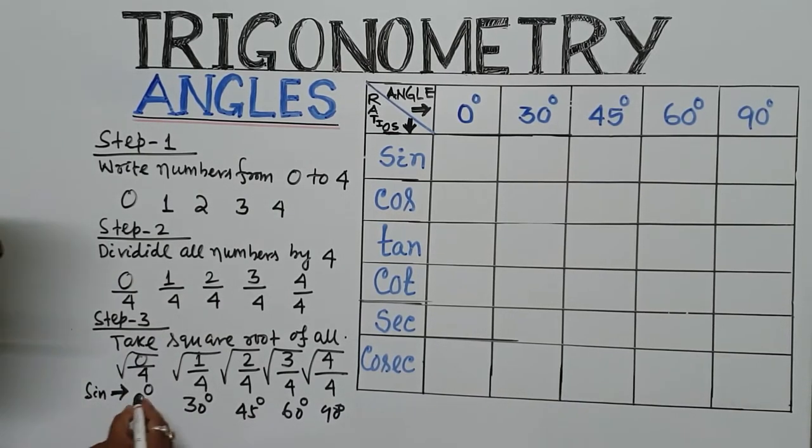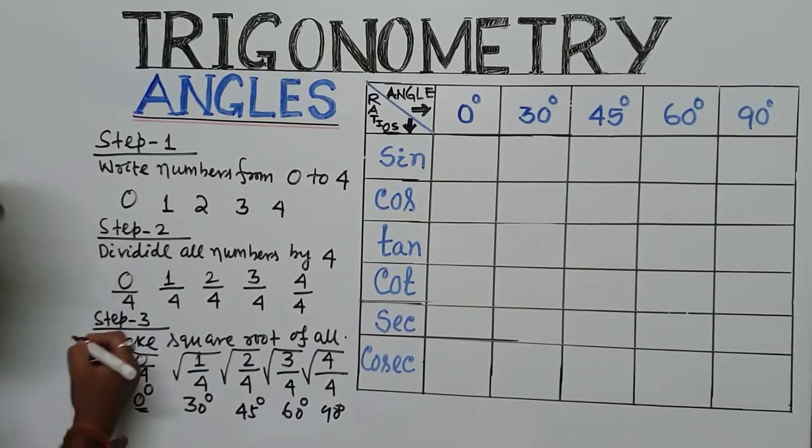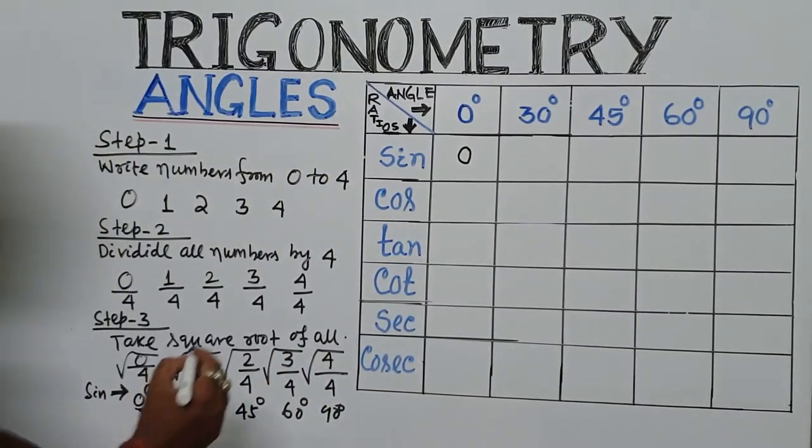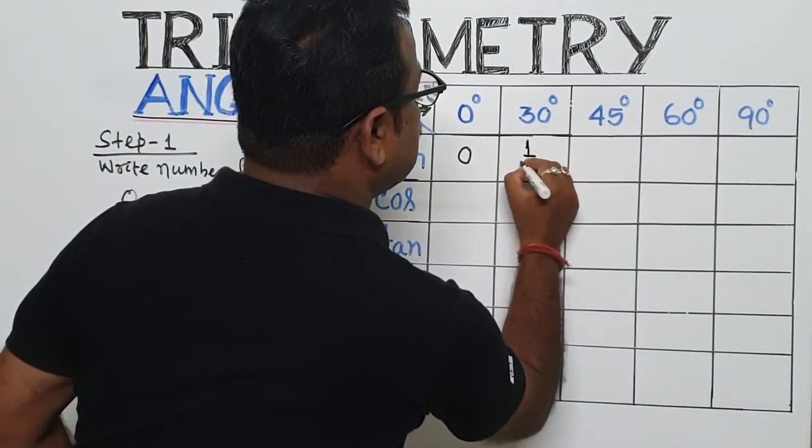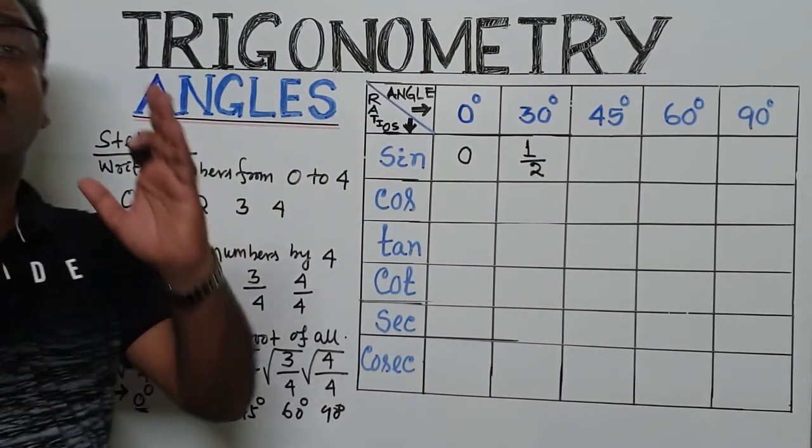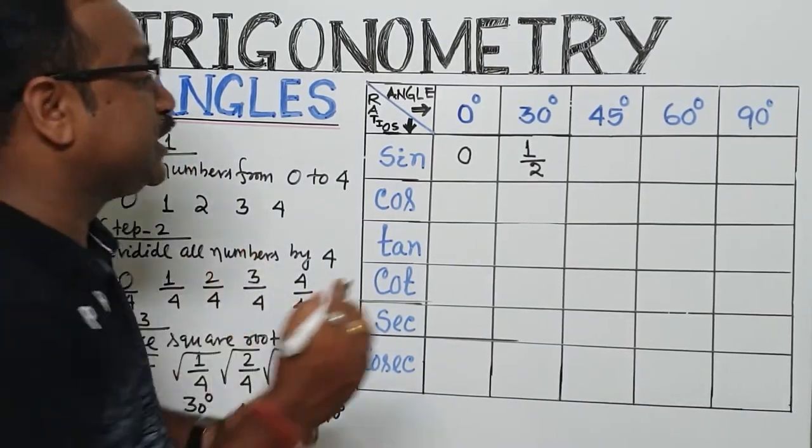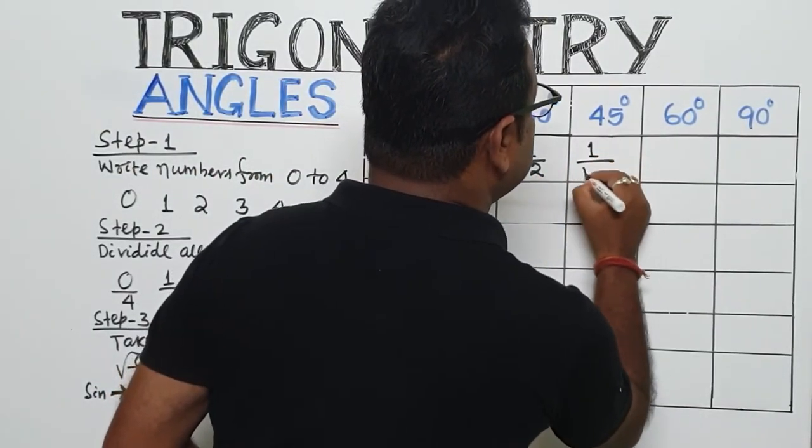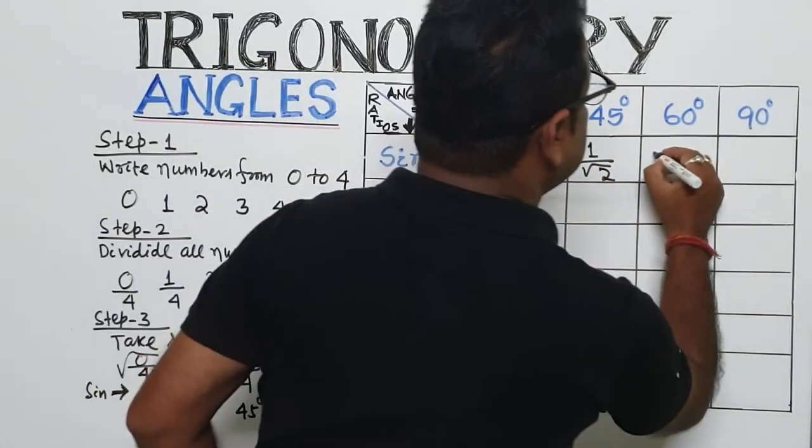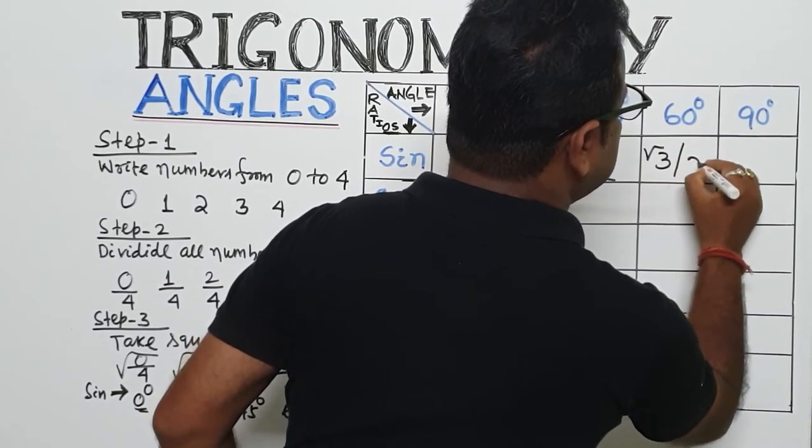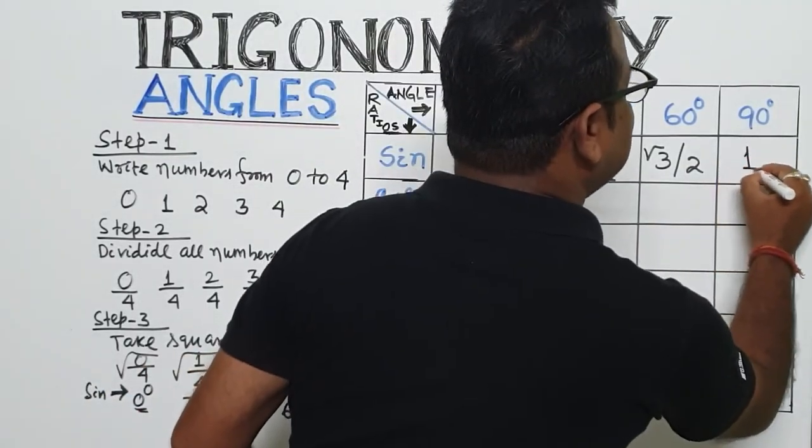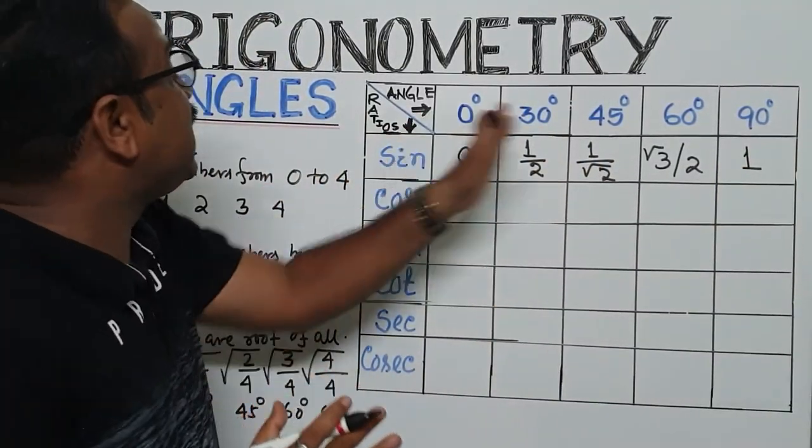Here, sin 0 degree: 0 by 4, 0 by something is 0, root over. Now, 1 by 4, that will be root over 1 by 4, will be 1 by 2. Now, 2 by 4 reduces to 1 by 2, and square root of 1 by 2 is 1 by root 2. Now, square root of 3 by 4, that will be root 3 by 2. Now, 4 by 4 is 1, square root of 1 is 1. Now, after writing the angle of the sine,